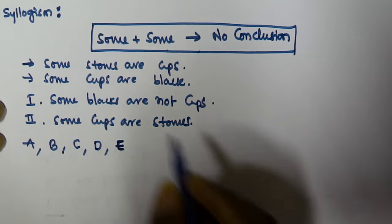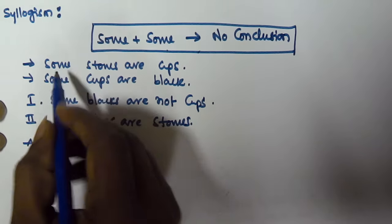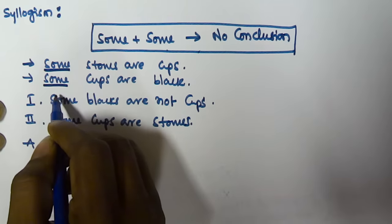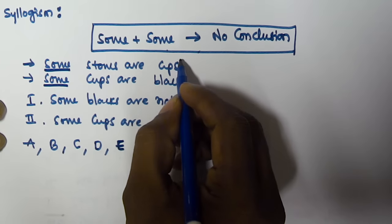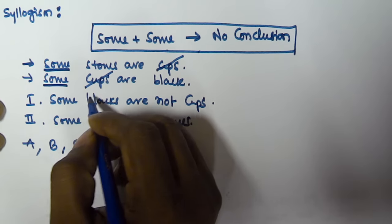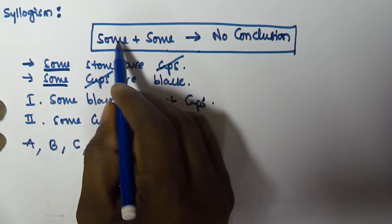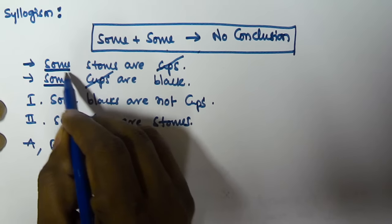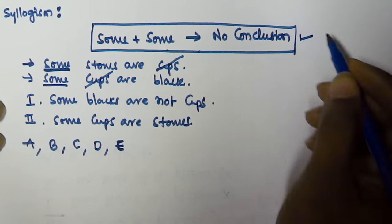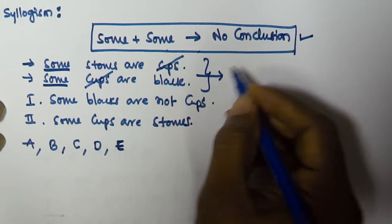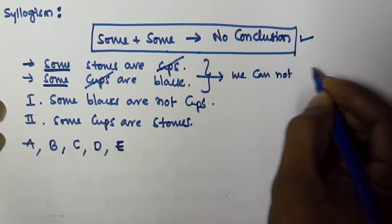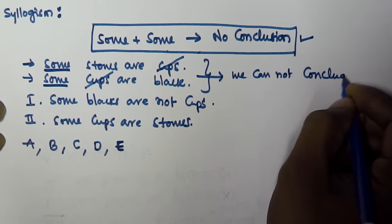The first syllogism is starting with 'some' and the second syllogism is also starting with 'some.' The predicate of the first syllogism is equivalent to the subject of the second syllogism. So according to the rule of 'some plus some,' this is going to give no conclusion.